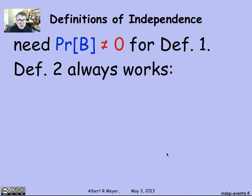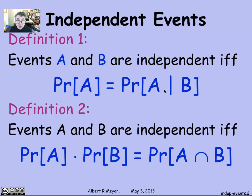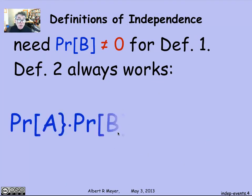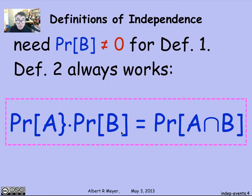Definition two has the slight advantage that it always works, whereas definition one implicitly requires that the divisor, remember, probability of A given B is defined as the probability of the intersection divided by the probability of B. It's only defined if the probability of B is positive. Whereas the second definition always works and we don't have to put a proviso in about the probability of B being non-zero. So that's the definition of independence.